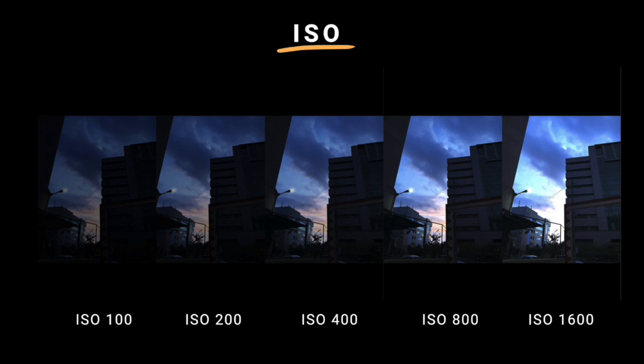Of course, in darker locations your ISO is bound to go higher, but try to avoid this. You can implement these settings on an iPhone using the Filmic Pro app mentioned earlier, and set on a DSLR normally. This will dramatically change the quality of your videos.